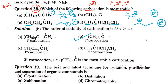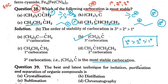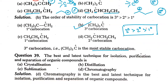So we have understood the answer. The answer would be B, the tertiary carbocation, which has the most stability. If you have to tell the stability order, it is: tertiary, then secondary, then primary. This was question number 38, and I hope it was very well understood. We will meet in the next class to discuss question number 39. Till then, take care and goodbye.